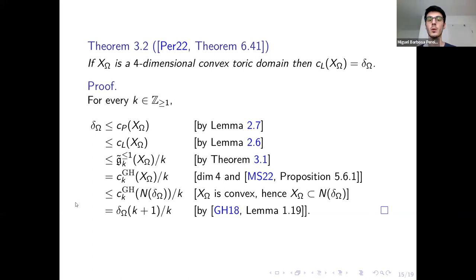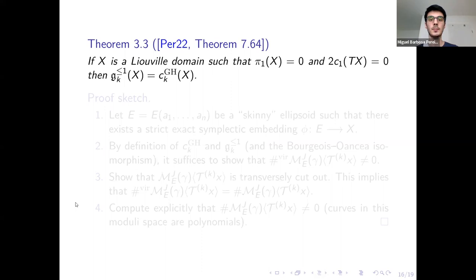The definition of those relies on linearized contact homology, so from now on in the talk I will always be assuming that linearized contact homology is something that exists and that we can use. In this case, I have shown that for any Liouville domain satisfying some topological assumptions, the higher symplectic capacities are equal to the Gutt-Hutchings capacities.